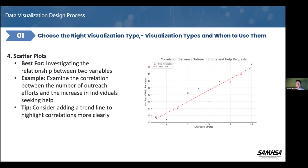In this case, 'outreach extent and help requests received' illustrates the correlation between the extent of outreach efforts and the number of help requests received, potentially identifying effective outreach strategies. You can see the help request plots and a trend line. The tip is: consider adding a trend line to highlight correlations more clearly.